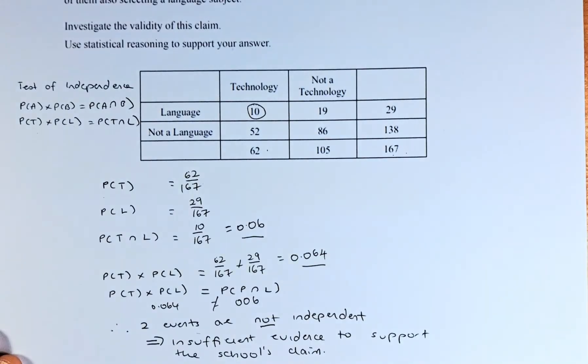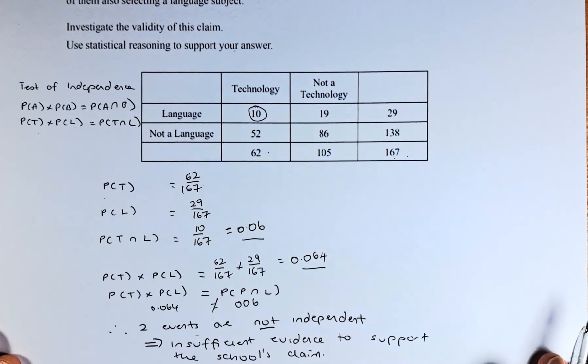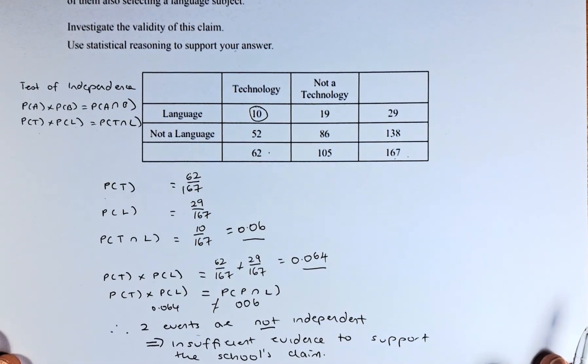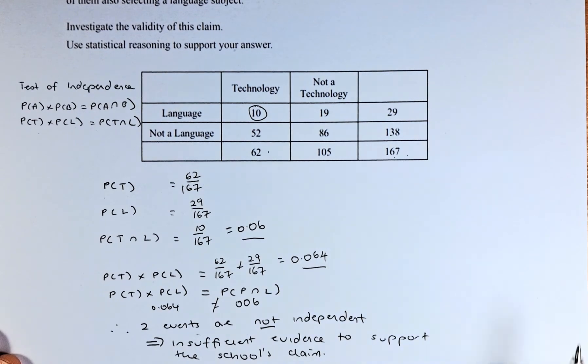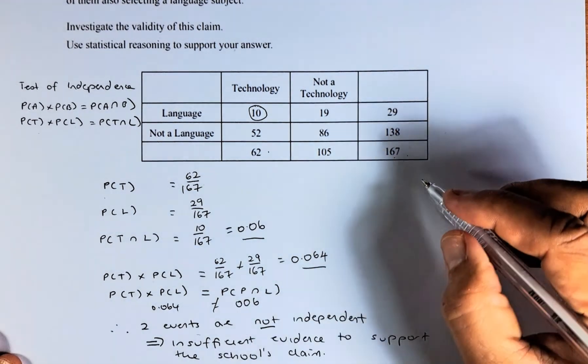If a student selects a technological subject, this has no effect on the probability of them selecting a language subject. This is how you answer question 1C and you get it right.